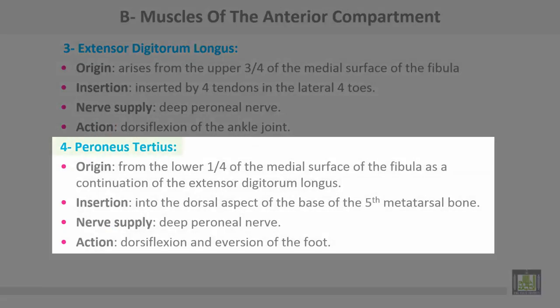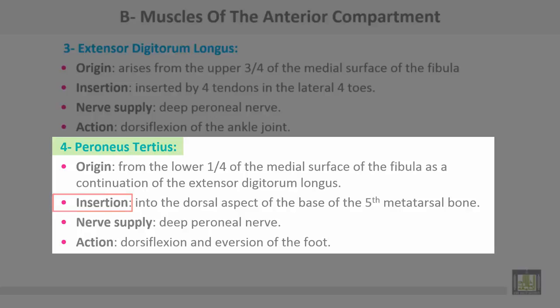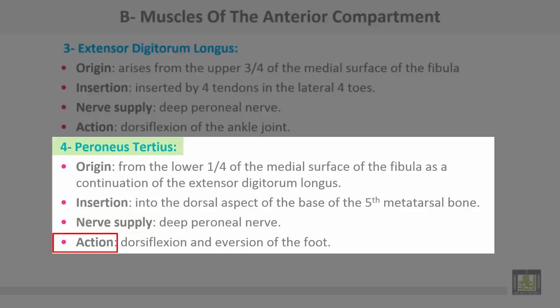Peroneus tertius is the fourth muscle. It takes origin from the lower quarter of the medial surface of the fibula, as a continuation of extensor digitorum longus. It is inserted into the dorsal aspect of the base of the fifth metatarsal. Nerve supply: deep peroneal nerve. Action: dorsiflexion and eversion of the foot.